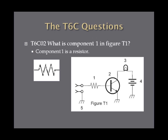What is component one in figure T1? Figure T1 is the diagram you'll be seeing on the exam. Component one in figure T1 is a resistor — you can tell it's a resistor by that zigzag back-and-forth squiggly line. Just remember that is a resistor, and you will see a lot of those.